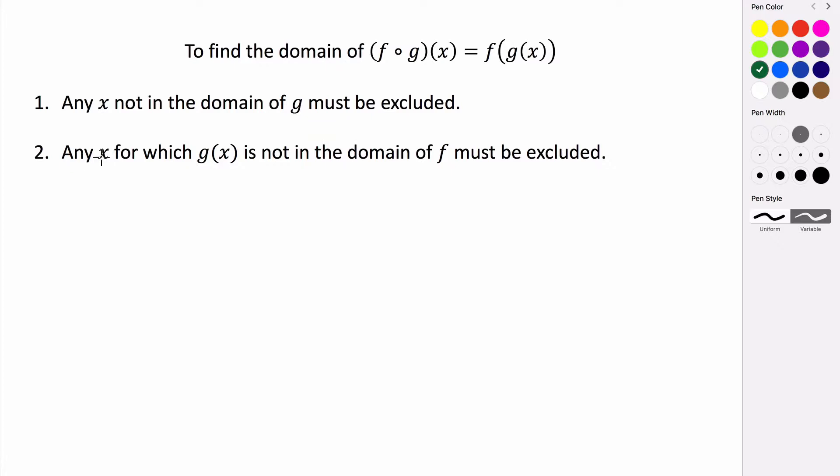Secondly, for any value of x that makes g of x some value that's not defined in the function f, that also has to be excluded. So if there's some domain restriction on f, we have to figure out what value of x do we have to plug in for g to make it that restriction. And then that x obviously can't be included because that would make our end function undefined. So let's take a look at how we can actually evaluate and find the domain of a given composition function.